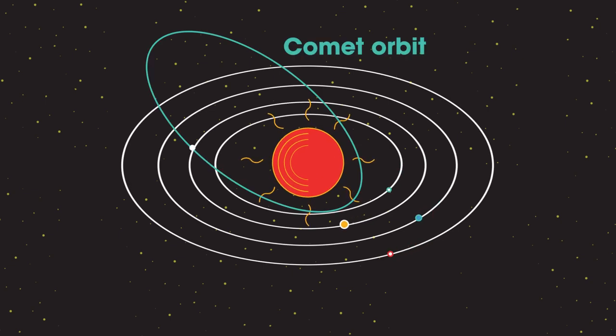Comets are similar to large dirty snowballs, a few tens of kilometers across, that follow a huge elliptical path around the Sun that may take decades, centuries or longer to complete one orbit. It was Sir Edmund Halley who was first to successfully predict the return of a comet that now bears his name. It returns every 75 years and was last seen in 1986. You do the maths.